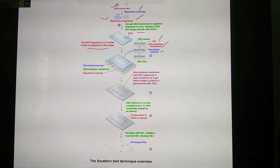Next is the nitrocellulose, which is an absorbent material. This is the sponge at the bottom. Then the gel, then the nitrocellulose, then the weight of paper on top. This is a side view. The alkaline solution helps transfer the DNA. Nitrocellulose membrane with DNA fragments at the same location as in the gel, still invisible, is baked to permanently affix the DNA.